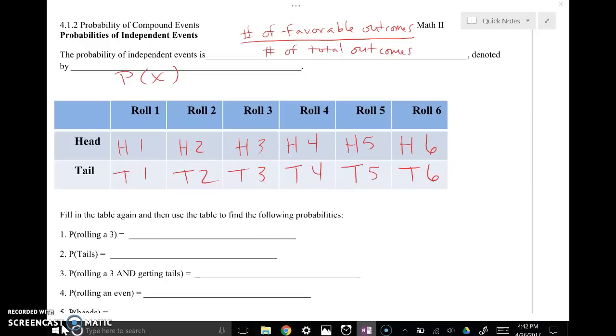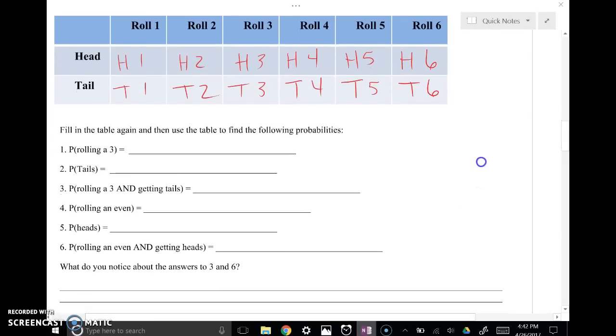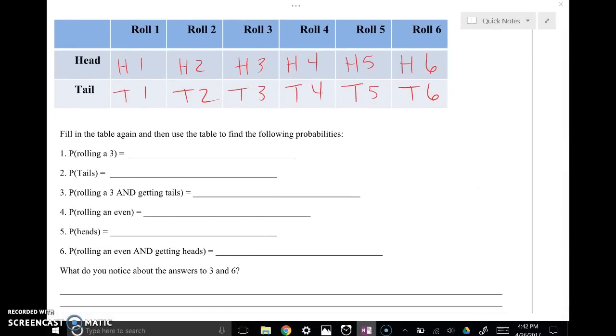Okay, now that you've done that, let's fill out the table together. All right, so what's the probability of rolling a 3? So out of the 2, 4, 6, 8, 10, 12 total options, there are 1, 2 of our 12 that have a 3. So that would be 2 out of 12, and if you reduce that fraction, 1 out of 6. So what's the probability? 1 out of 6. Now you can leave it as a fraction. You can turn it into a decimal if you'd like. I'm going to leave them as fractions just for time purposes.